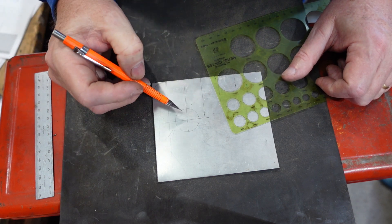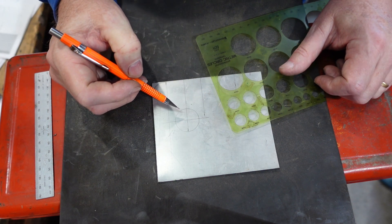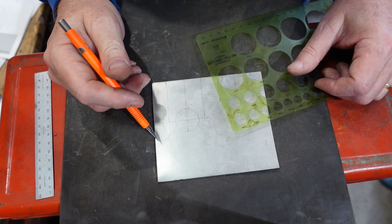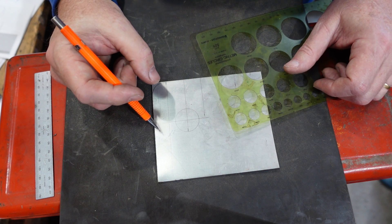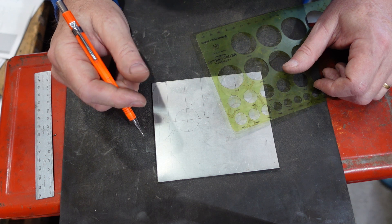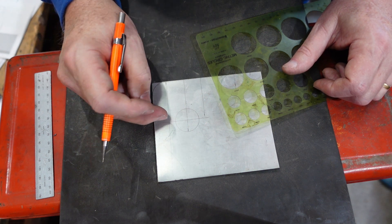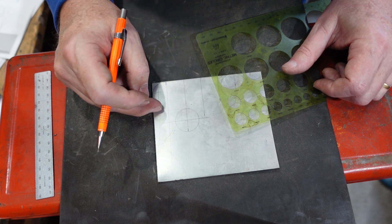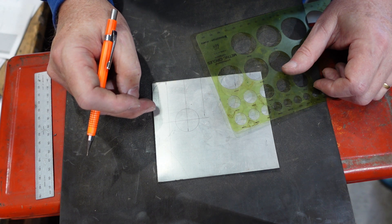Now one thing too if you don't want to mark your material at all, one thing you can do and this might also be useful if you've got something like a waxy plastic where it doesn't want to take a mark very easily, you can put masking tape down, mark on the masking tape and use that for your marking out.